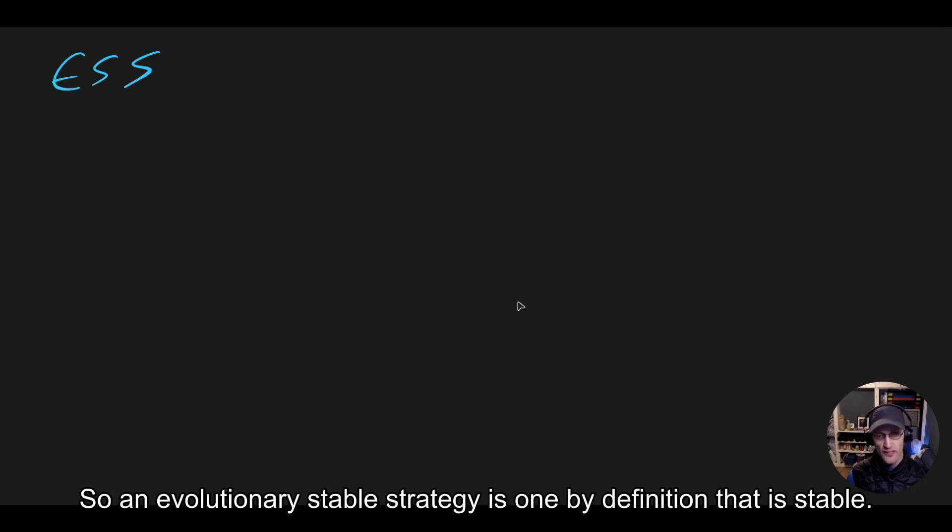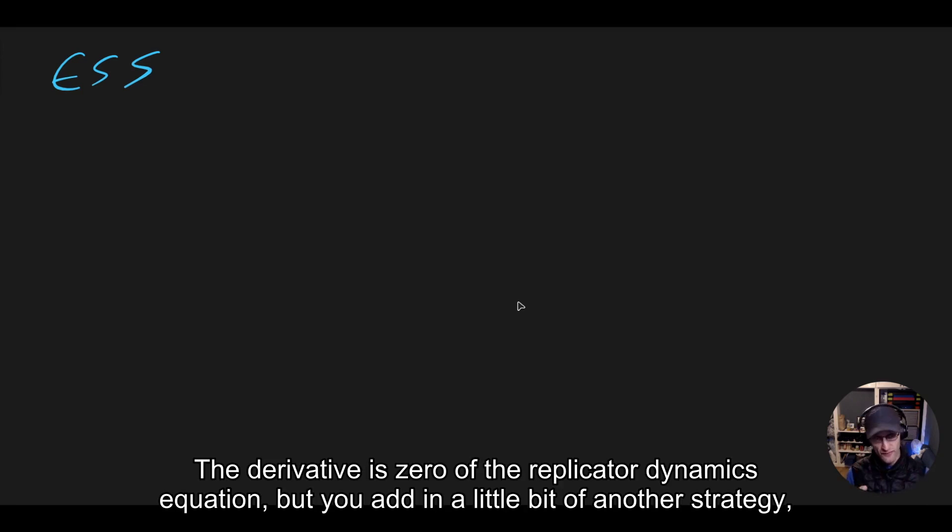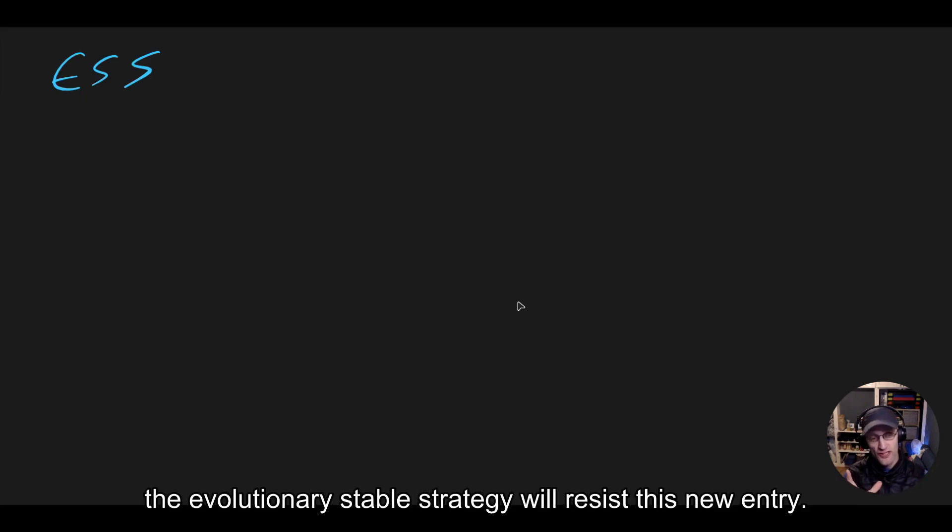So an evolutionary stable strategy is one by definition that is stable. The derivative is zero of the replicator dynamics equation. But you add in a little bit of another strategy, the evolutionary stable strategy will resist this new entry.